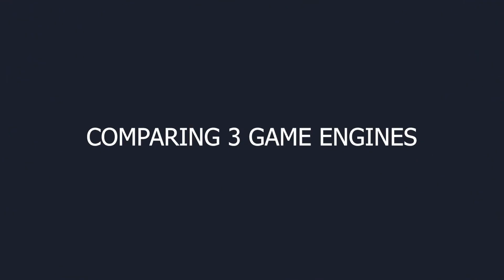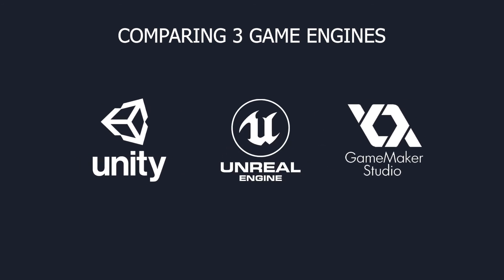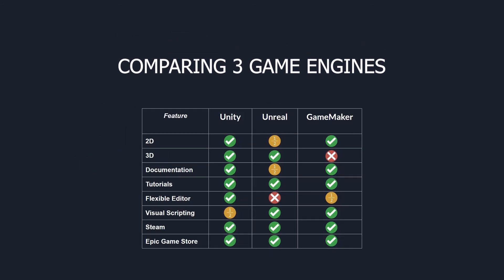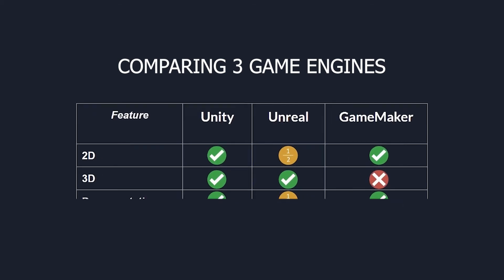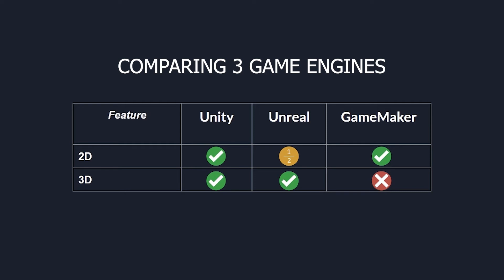Moving on, I've decided to compare three engines I've used quite a bit: Unity, Unreal, and GameMaker. I came up with a few features on the left that I think are important to me as a game developer, as well as to some other developers. To summarize, the top two rows are basically about how important it is to have every kind of game be possible — I've summarized that here as 2D and 3D.